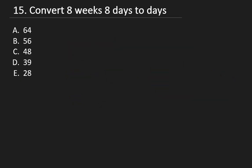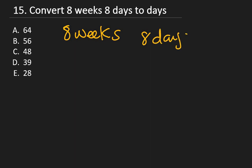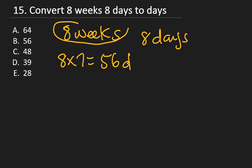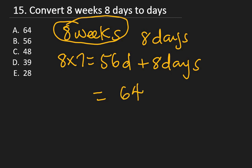Question 15: Convert 8 weeks and 8 days to days. There are 7 days in a week, so 8 × 7 = 56 days. Adding the extra 8 days: 56 + 8 = 64 days. The right answer is A: 64 days.